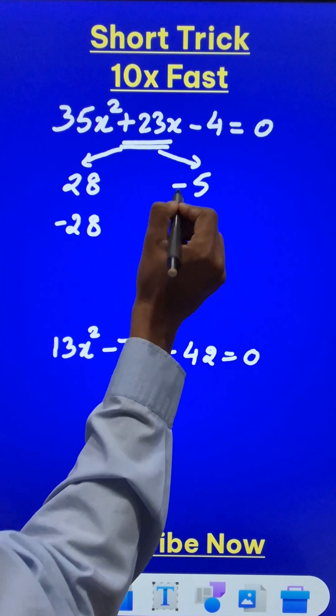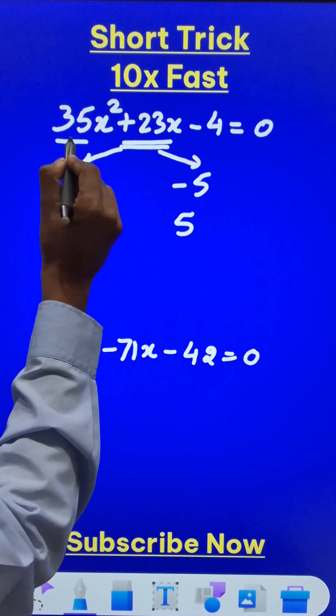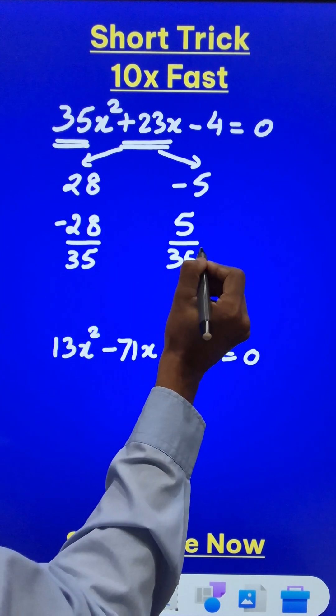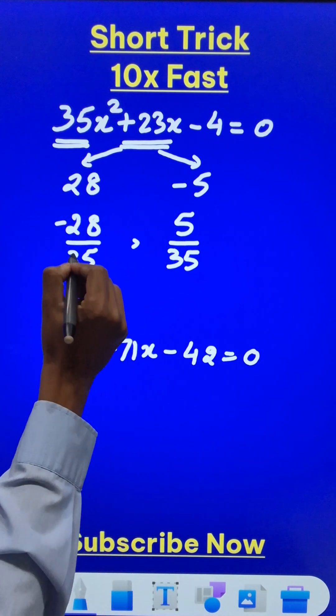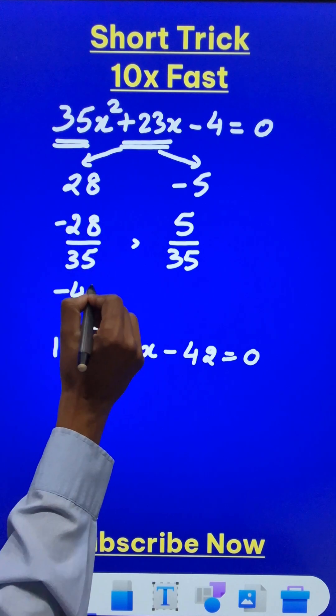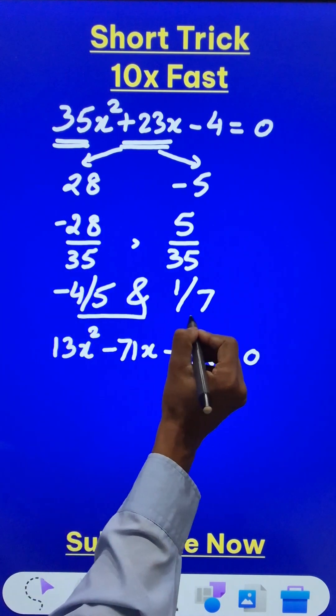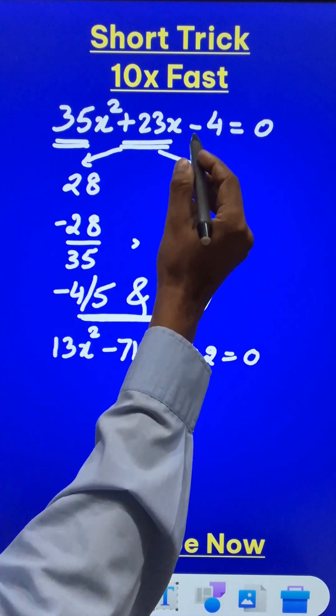Now the coefficient of x square is 35, so just write 35 in the denominator for both these roots and reduce them to the lowest form. This is minus 4 fifths and the other one is 1 seventh. These two are the solutions of this quadratic equation.